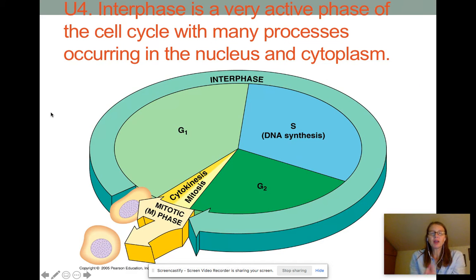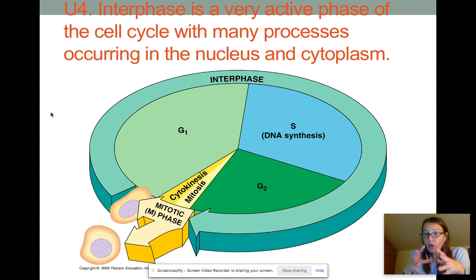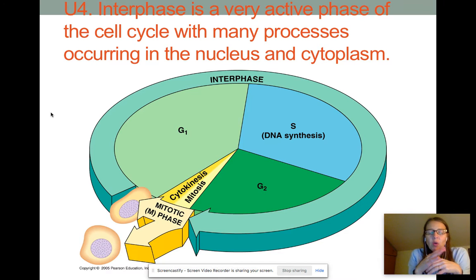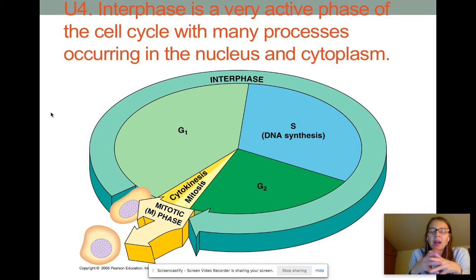In this screencast, we're going to be looking at how the cell can actually control whether it's going to divide or not within the cell cycle. So what are the things that will determine if a cell is going to go on and divide or not? Here's our cell cycle — we've got interphase, and then the cell dividing phase, the mitotic phase.